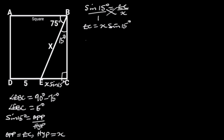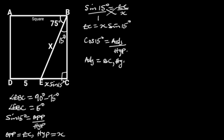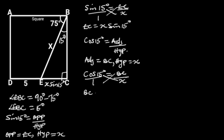Also, from trigonometric ratios, cos 15 degrees is equal to adjacent over hypotenuse. The adjacent of triangle BCE is BC, and the hypotenuse is X. If we plug in these values, we will have cos 15 degrees is equal to BC over X. By cross-multiplication, BC will be equal to X cos 15 degrees.